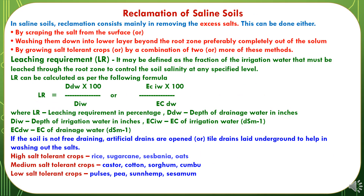Reclamation of saline soils consists mainly in removing excess salt, which can be done by three methods: first, by scraping the salts from the surface; second, by washing them down to lower layers beyond the root zone, preferably completely out of the soil; and third, by growing salt tolerant crops. These methods can also be combined. There is a leaching requirement, defined as the fraction of irrigation water that must be leached through the root zone to control soil salinity at a specified level. The formula is: LR = (DDW / DIW) × 100, or equivalently (ECIW / ECDW) × 100, where LR is leaching requirement in percentage, DDW is depth of drainage water in inches, DIW is depth of irrigation water in inches, ECIW is EC of irrigation water, and ECDW is EC of drainage water.